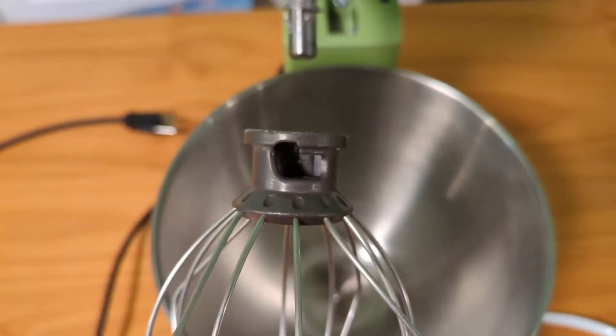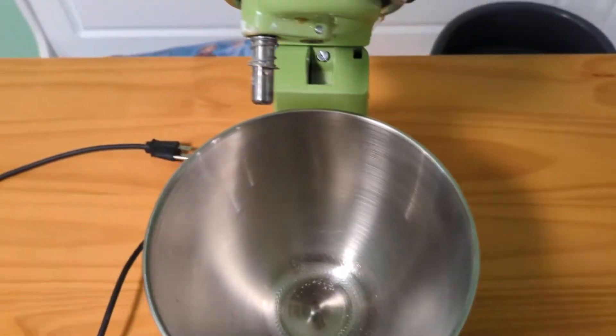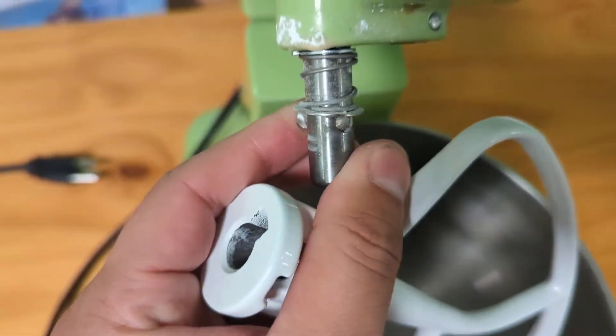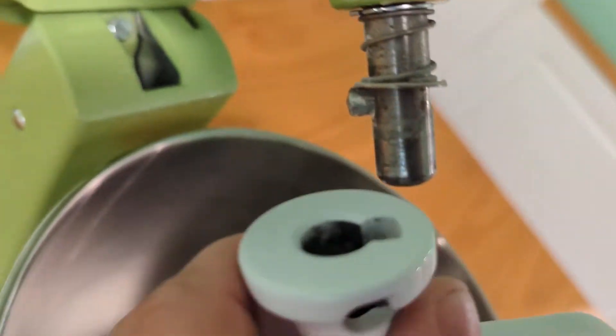And as you can see, these attachments here are all keyed so that they stay securely on the mixer. Essentially there's a little pin here. If you see this on the mixer, basically this hops in here, goes in with the key.